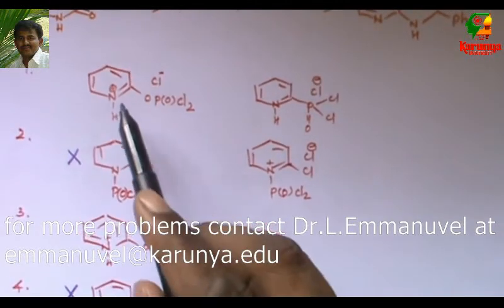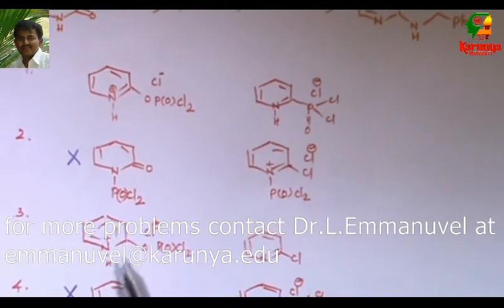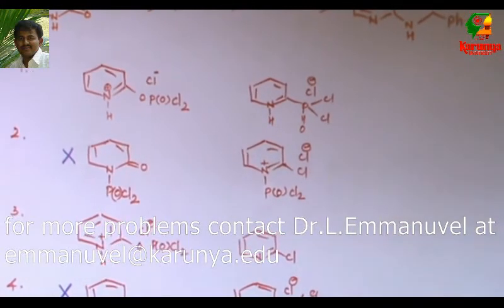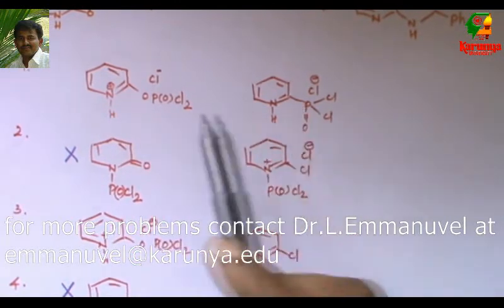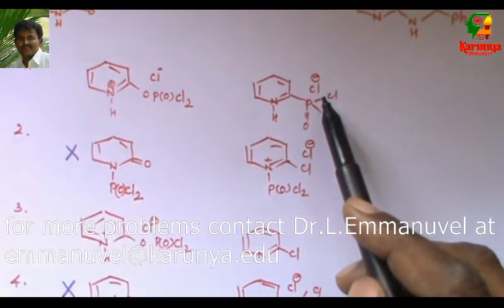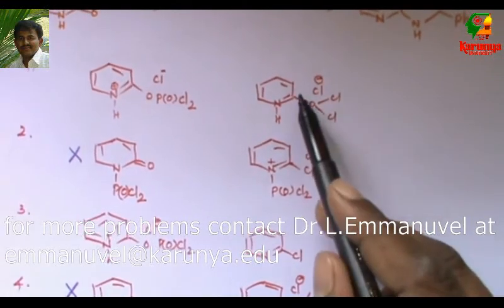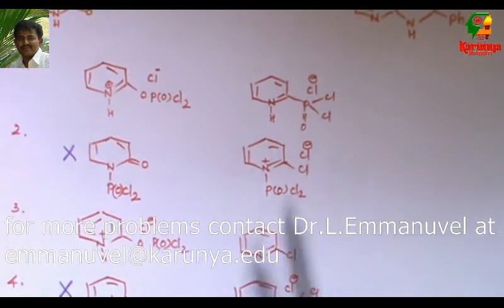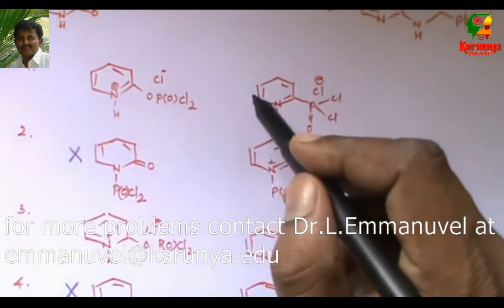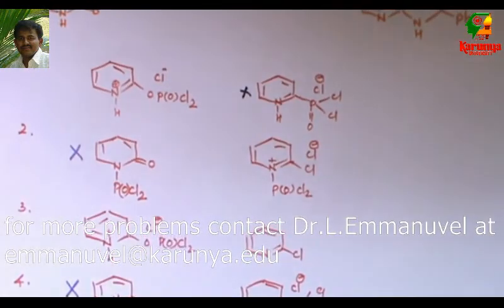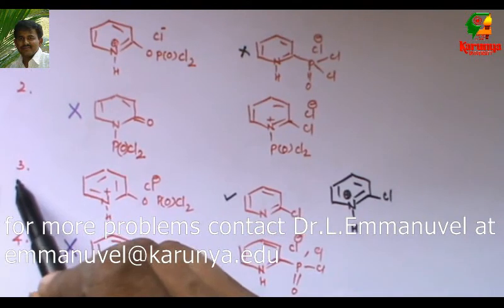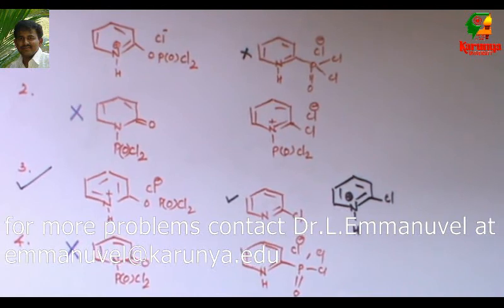Now let us look at the given options. For options 1 and 3, the intermediate A is correct. What about intermediate B? In option 1, somehow only the oxygen has been removed, so the oxygen is missing. That is not possible — the whole OPOCl2 group should be leaving, not just the oxygen. In option 3, this is the correct product. So the answer is 3. Thank you for watching. Have a nice day.